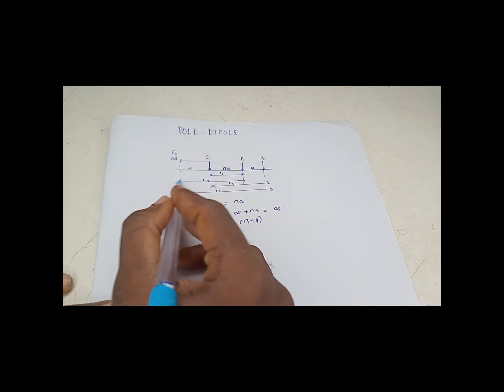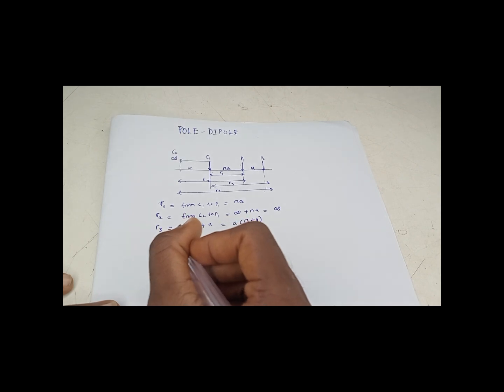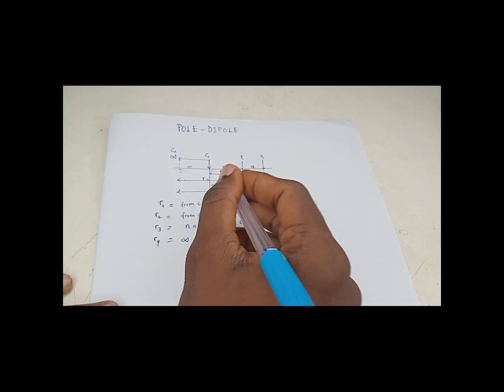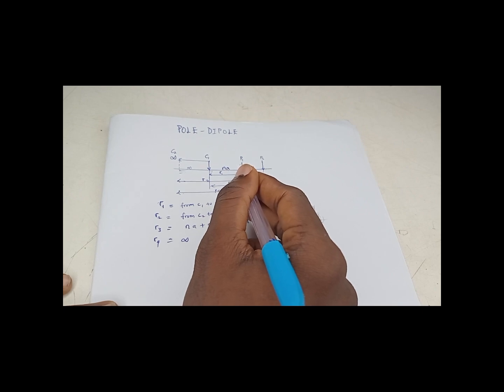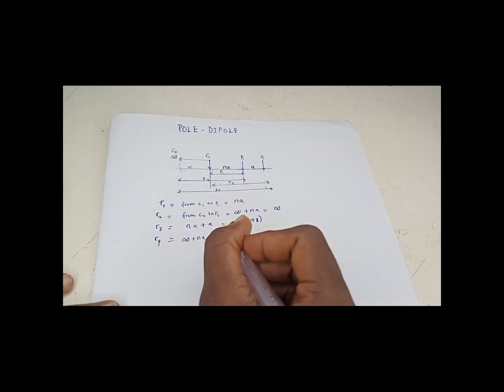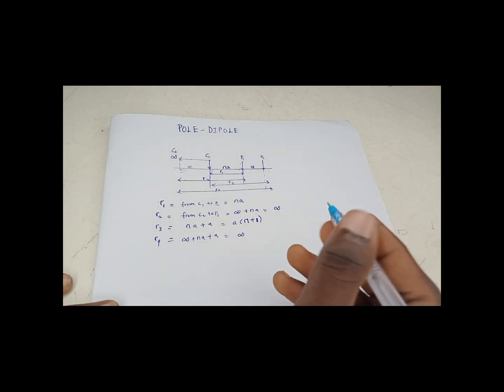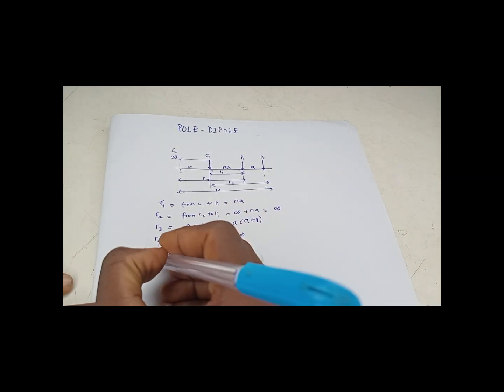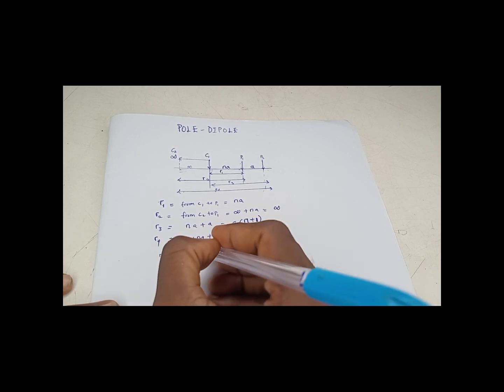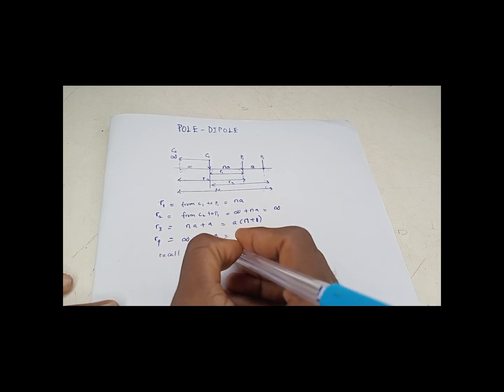R4 is from C2 to P2, which is C2 adding distance from here to here, which is infinity. Infinity plus N times A plus A. Anything plus infinity is always infinity. Recall also on your basic math, 1 over infinity is equal to zero.